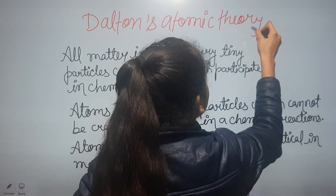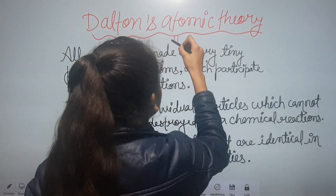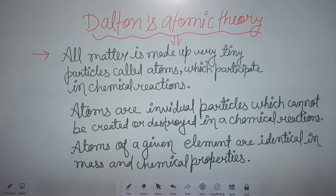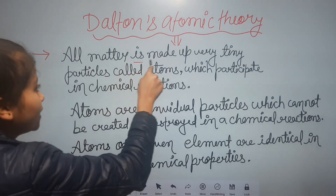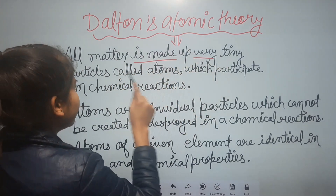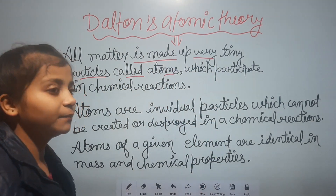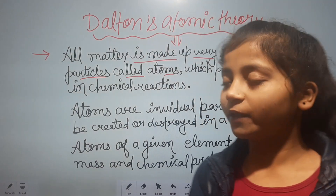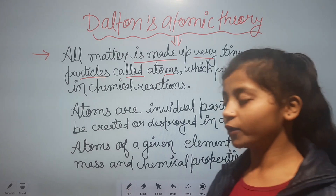So this is the theory given by Dalton. Our first point is: all matter is made up of very tiny particles called atoms. It means all matter is made up of very tiny particles called atoms.